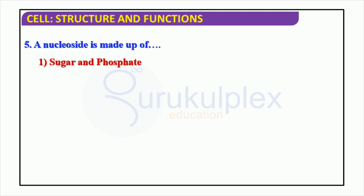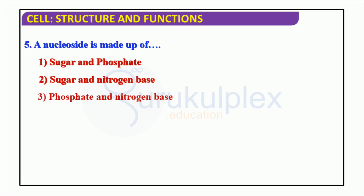A nucleoside is constituted of a sugar, a phosphate, and a nitrogen base, thus making it a basic constituent of life. The sugar-phosphate backbone imparts it the characteristic of a nucleotide, while the nitrogen base differentiates it from other types of nucleic acids such as DNA or RNA. This specific combination of sugar, phosphate, and nitrogen base makes it possible to encode genetic information.